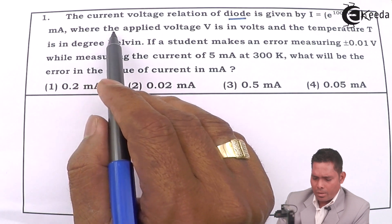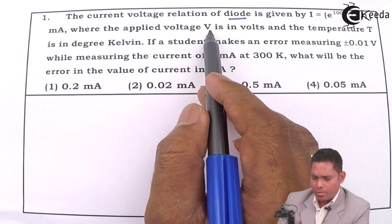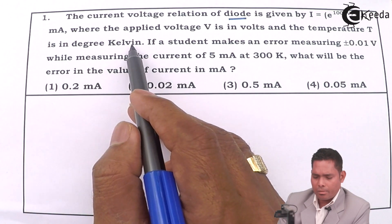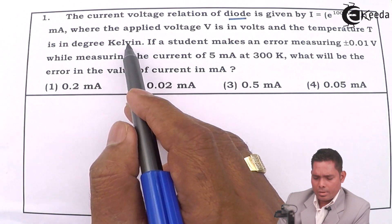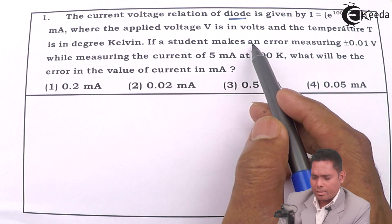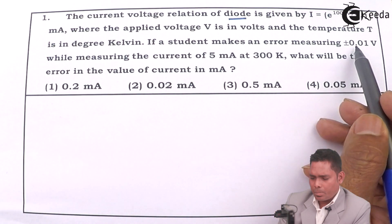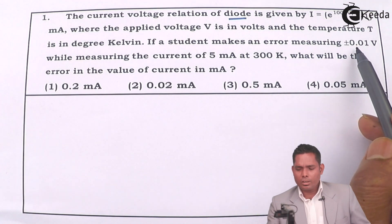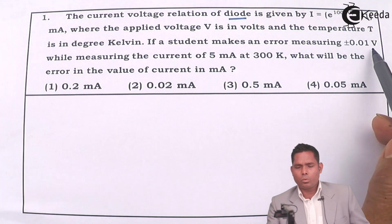I equals e raised to 1000V/T minus 1 milliampere, where the applied voltage V is in volts and temperature T is in Kelvin. If a student makes an error measuring plus minus 0.01 volt, so the error in the measurement of voltage is 0.01 volt.